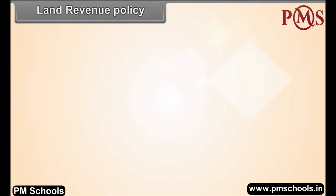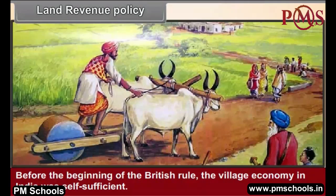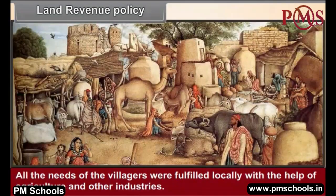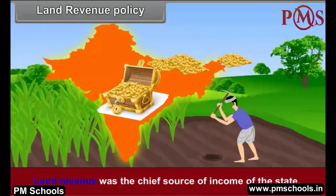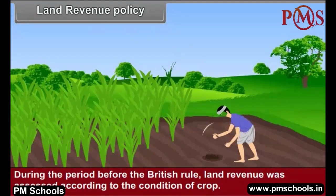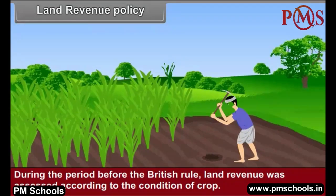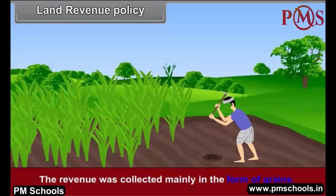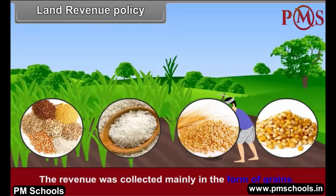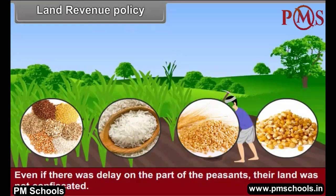Before the beginning of British rule, the village economy in India was self-sufficient. Land revenue was the chief source of income of the state, and it was assessed according to the condition of the crop. If the crop failed, land revenue was waived. The revenue was collected mainly in the form of grains, and even if there was a delay on the part of the peasants, their land was not confiscated.